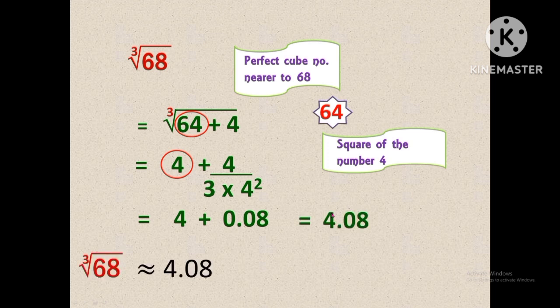The final approximation cubic root value of 68 is 4.08. You have to remember that with this method you can find only the approximation value, not the perfect value. So whenever an approximation value is needed, you can use this method. You can also make use of this method in competitive exams, because this method will save you more time.